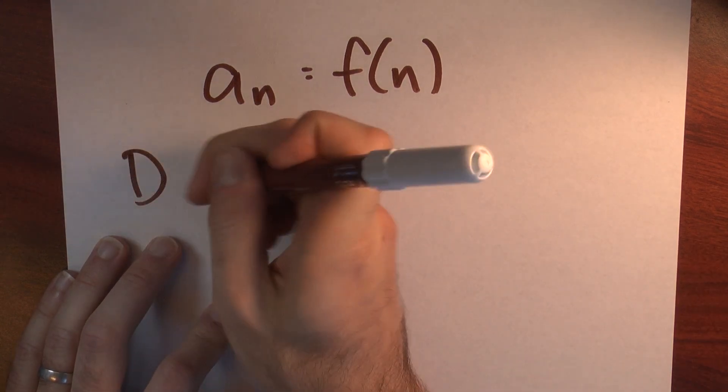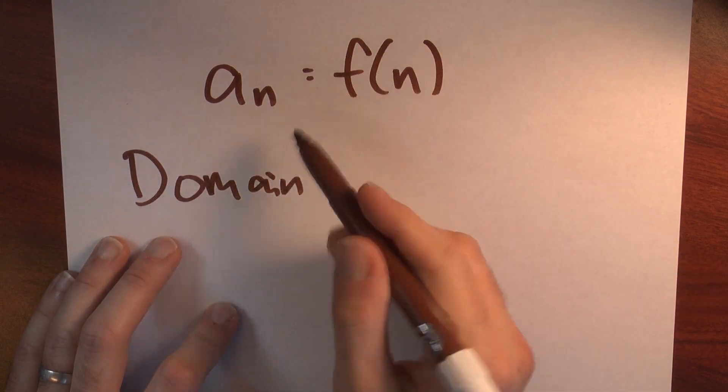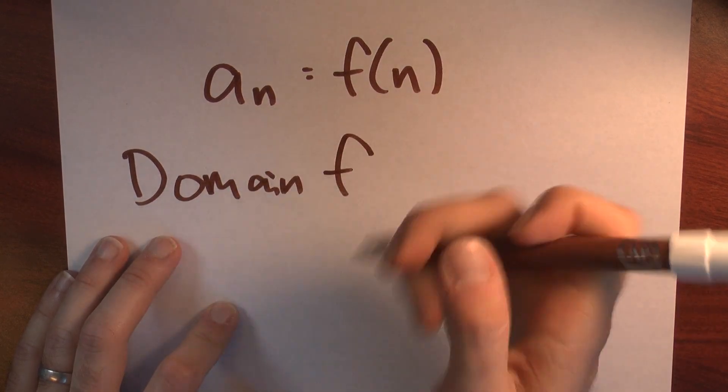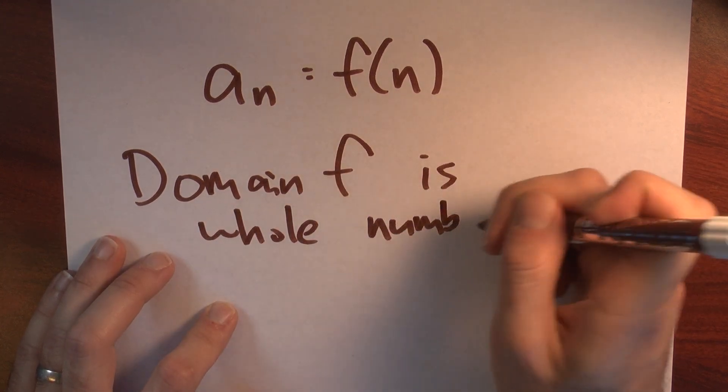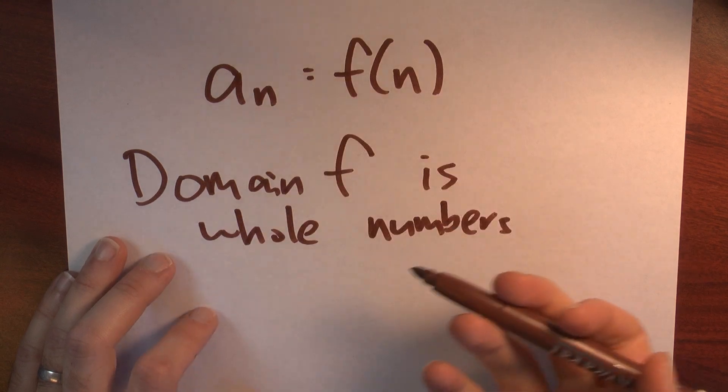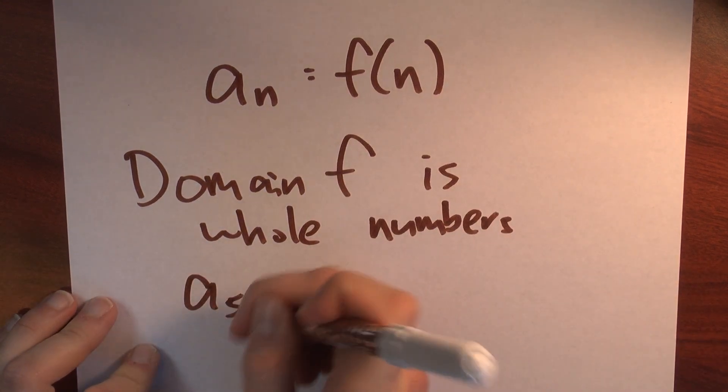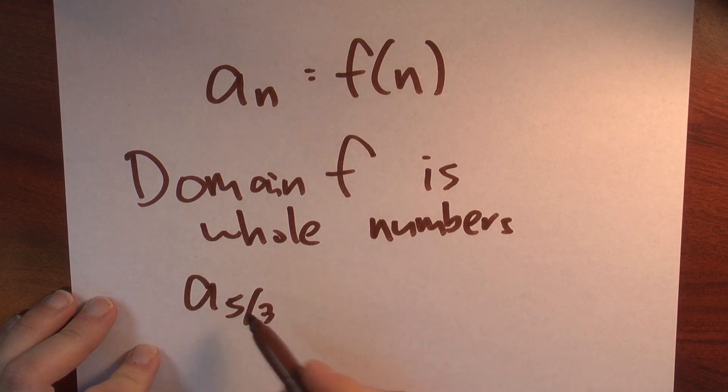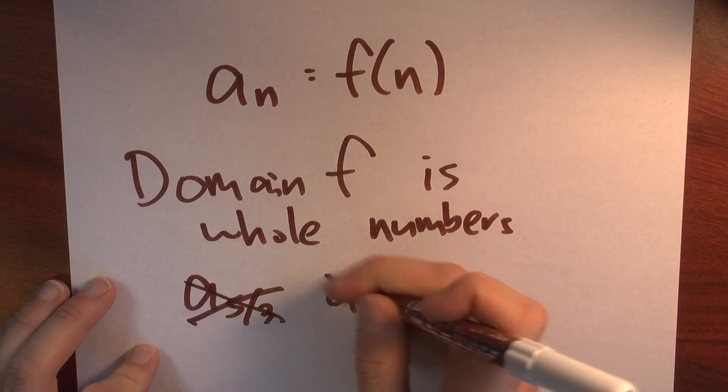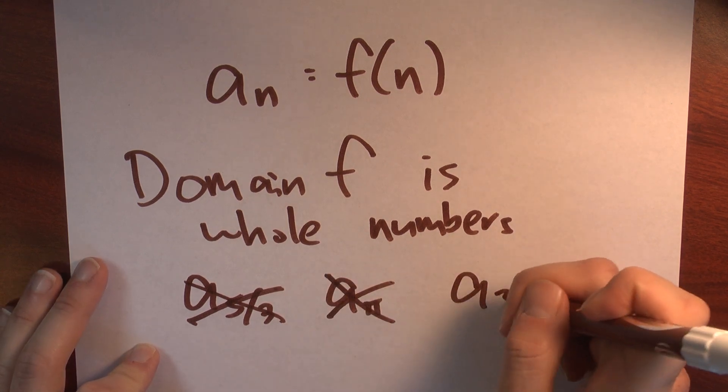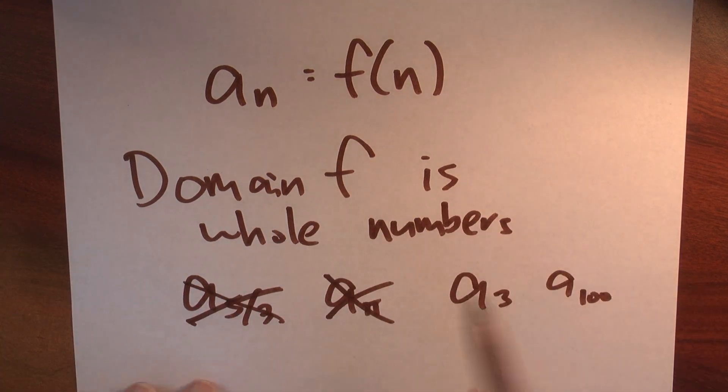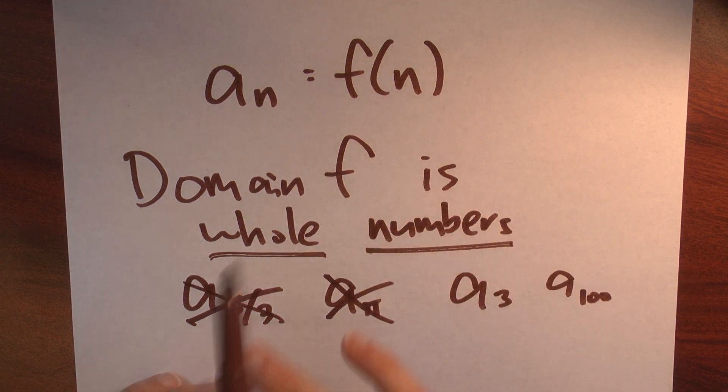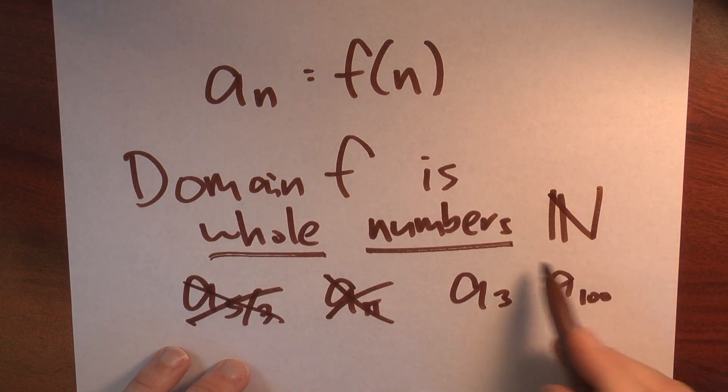So it's worth pointing out then, what's really the domain of this function that's playing the role of the sequence? Well, the domain of f should just be whole numbers. I don't want to talk about the 5 thirds term of the sequence, right? It doesn't really make sense usually to talk about a sub 5 thirds or a sub pi, but it does make sense to talk about a sub 3 and a sub 100. So the domain of my function, the thing that I'm allowed to plug in for n, should really just be whole numbers, and I'll usually denote that with this fancy looking n.